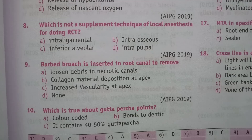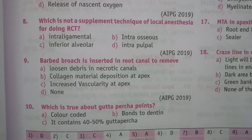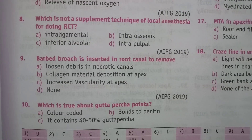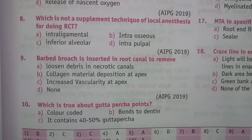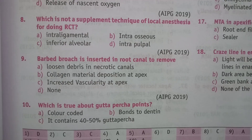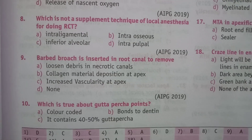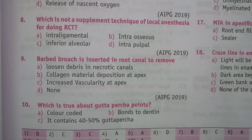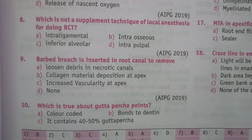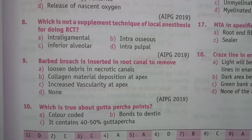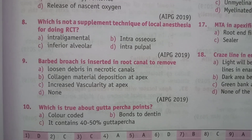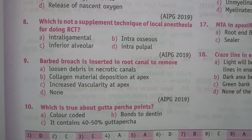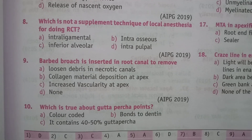Next question: which is true about gutta percha points? Option A, color coded; Option B, bonds to dentin; Option C, it contains 40 to 50% gutta percha; Option D, can be heat sterilized. The correct answer is Option A, color coded.